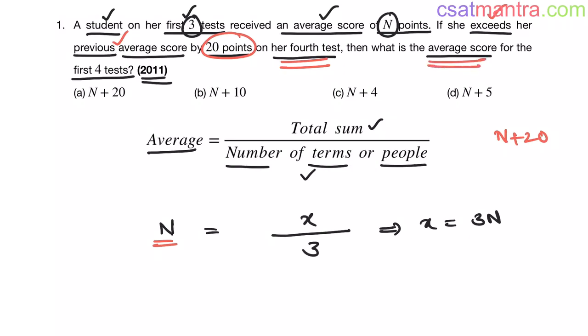Now what is the average for the first four tests? So the average equals total number of points obtained in all four tests. For first three tests it is 3N my friends.